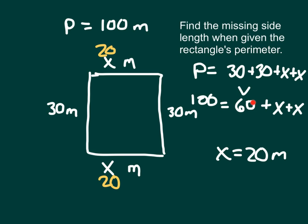To solve this algebraically: to get rid of the 60, we use the opposite operation — minus 60. If we subtract 60 from one side of the equation, we must subtract 60 from the other to keep it balanced. 100 minus 60 is 40, and 60 minus 60 is 0, leaving two unknown values that must be the same number adding to 40. Those two numbers are 20, because 20 plus 20 is 40. We'll continue to work with rectangles, areas and perimeters, and different types of problems.